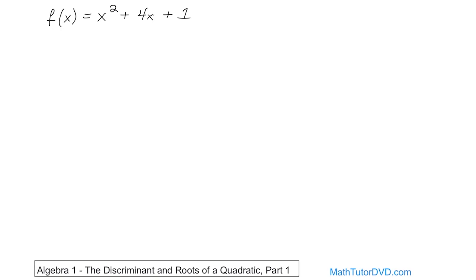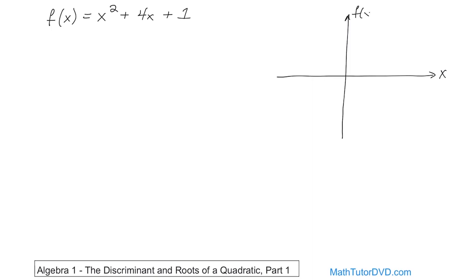So let's take a look and sketch the graph of it, and I want to show you a few things. I'm just going to do a general sketch — I'm not looking for accuracy here, just looking to give you an idea of what this looks like. So this is x and this is f of x.